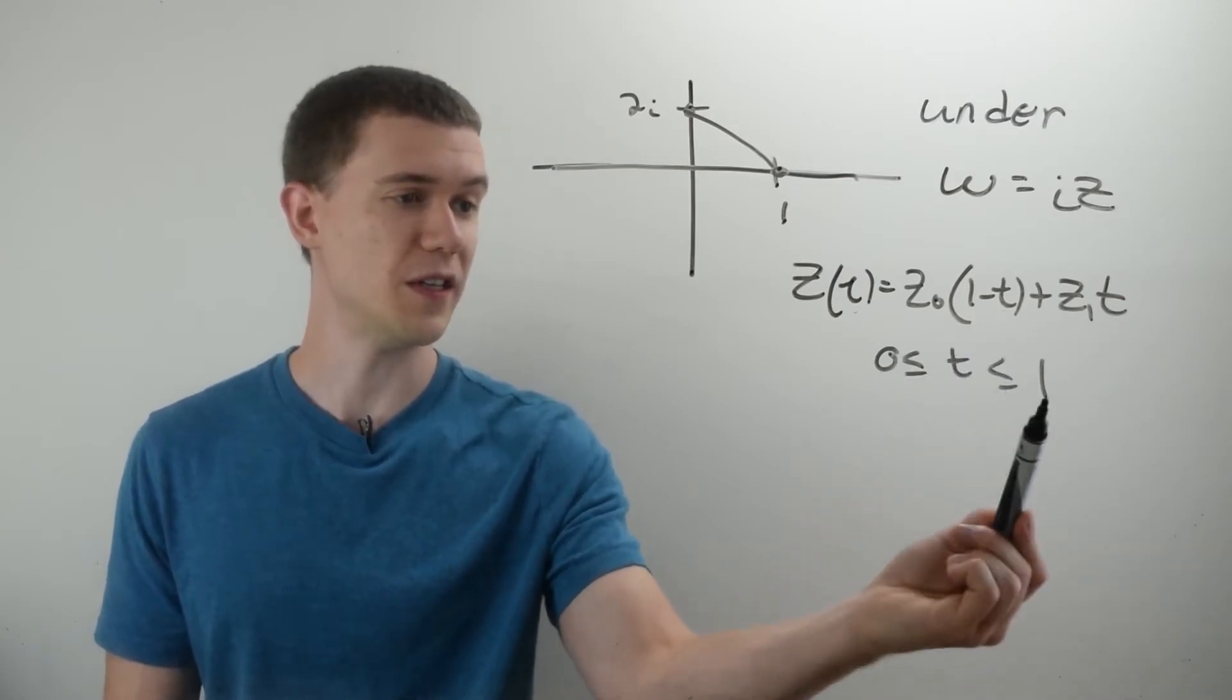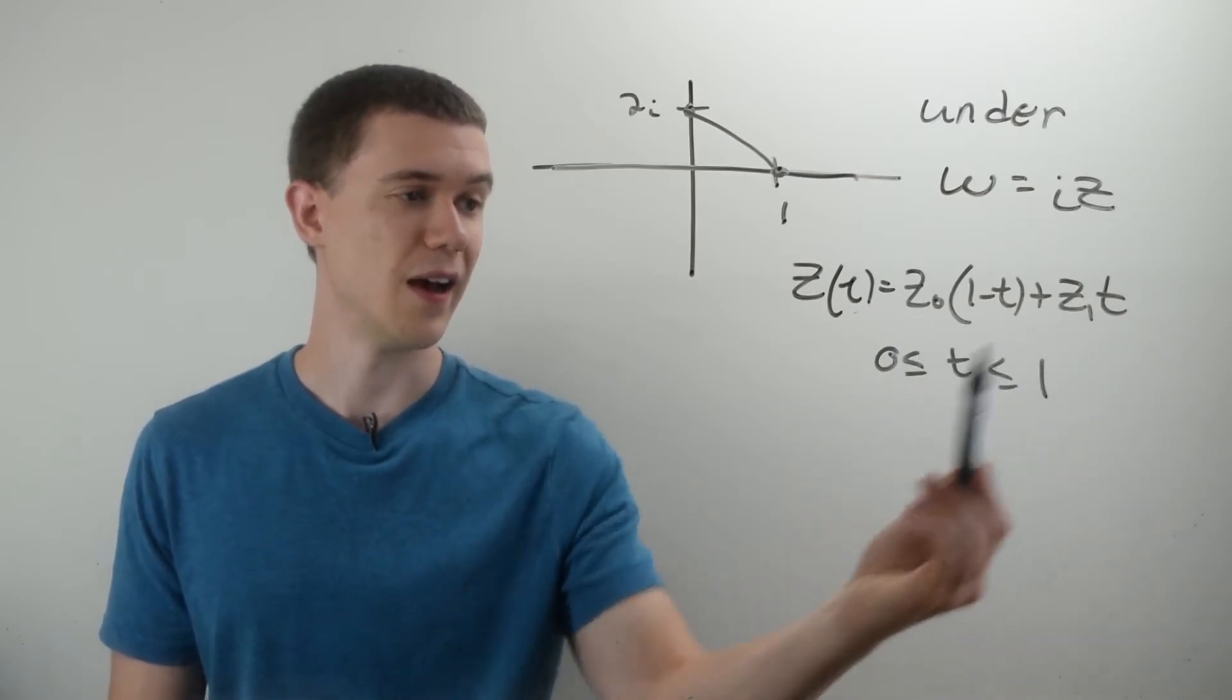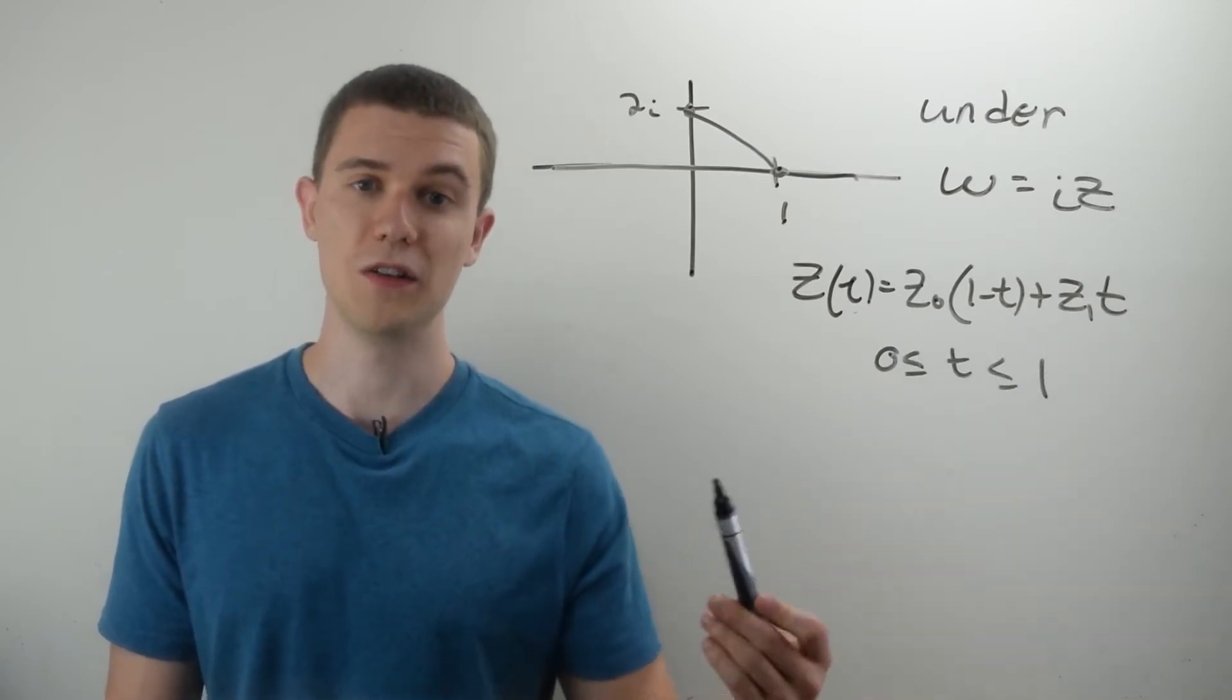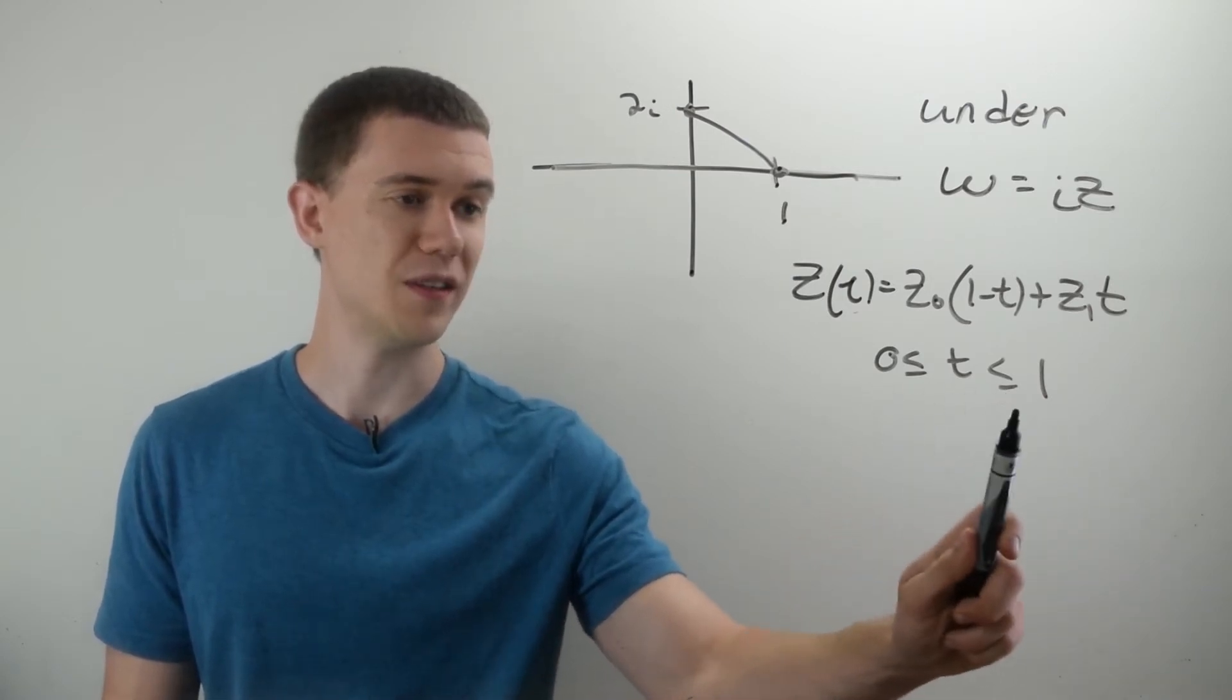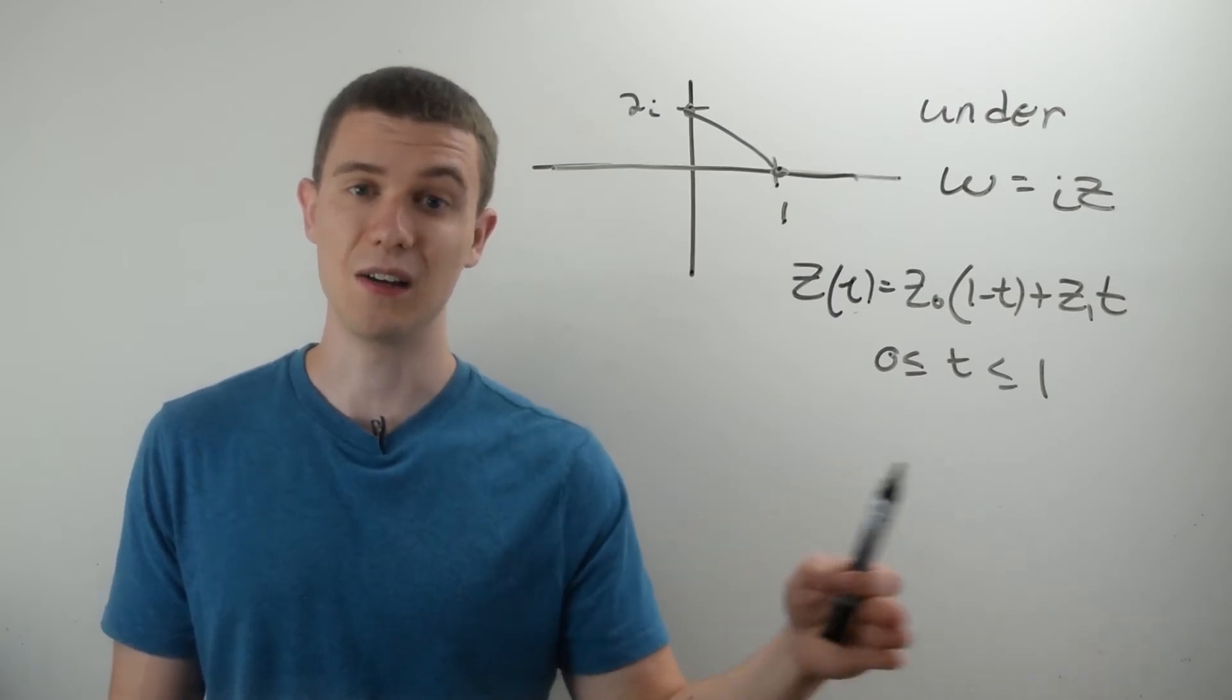If I plug in 1 for T, 1 minus 1 is 0, the Z naught term will drop out, and I'll just be left with the Z1 point, the terminal point. So for T varying between 0 and 1, this equation will vary across the entire line segment, starting at Z naught and finishing at Z1.